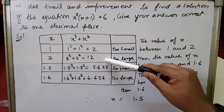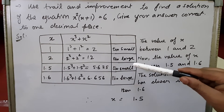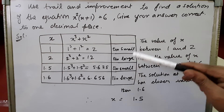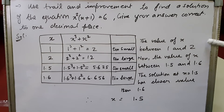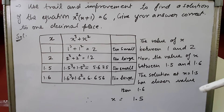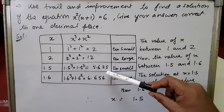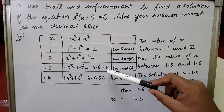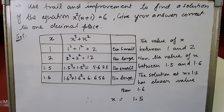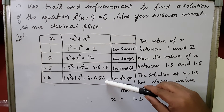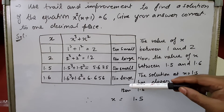When x = 2: 2³ + 2² = 8 + 4 = 12, which is too large. So we know the value of x lies between 1 and 2. Let's try x = 1.5: substituting into the equation gives 5.625, which is too small.